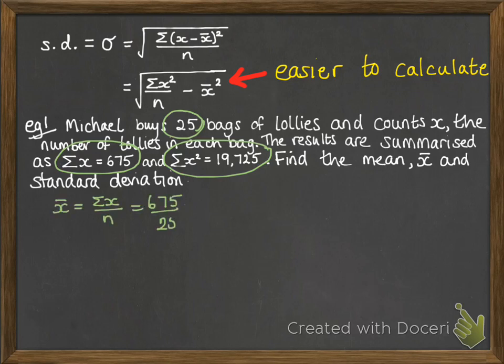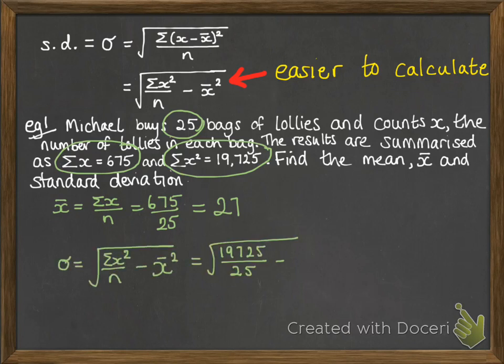And the sum of x squared is 19,725. So that means count the number of lollies in each bag, square it, and then add that up for all 25 bags. We want to find the mean x̄ and the standard deviation. There's the important bits of information that we need in the question. So first we'll work out x̄, which is add up all of the values that we've got for each of the bags. So that's the 675, and divide by the 25 bags, and we get an average of 27 in each bag. Next, doing the standard deviation, we're substituting in the values that we've been told. So the sum of x squared we're told in the question is that 19,725. Divide it by n, our number of bags, 25. Take away the mean squared that we've just worked out of 27. Square root that all, and we get 7.7.